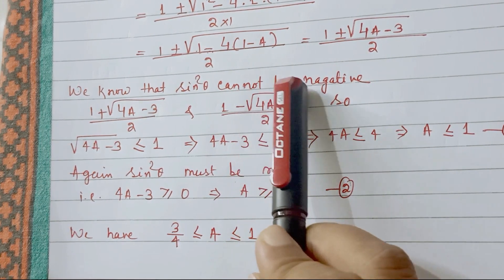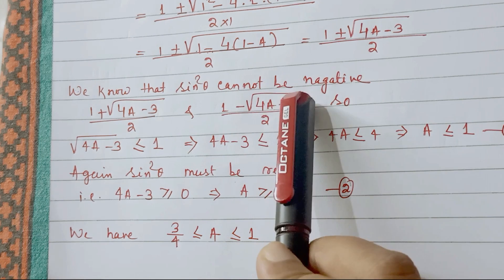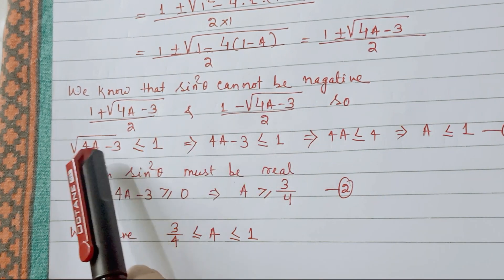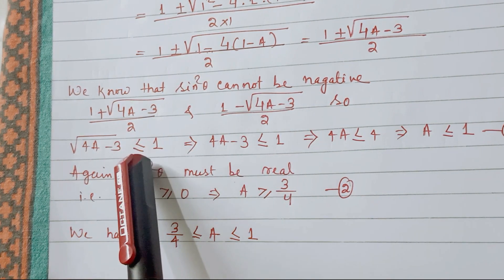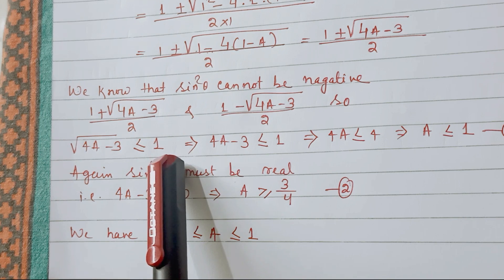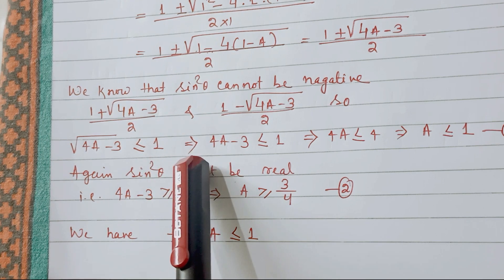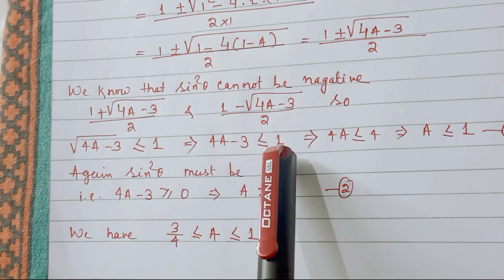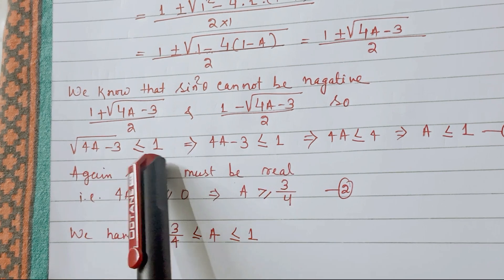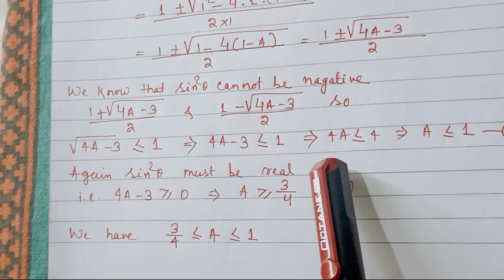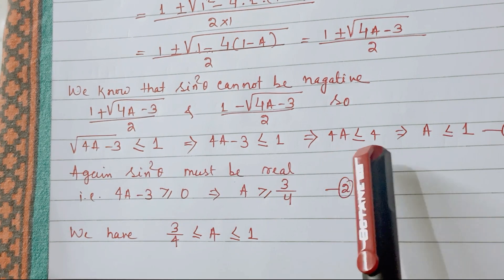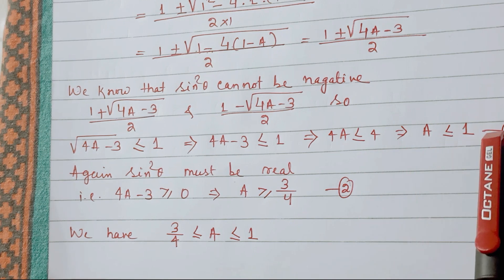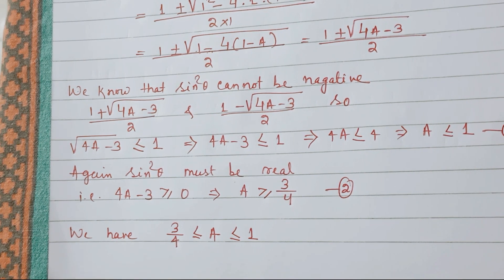So √(4A − 3) must be less than or equal to 1, which implies 4A − 3 ≤ 1 (squaring both sides). Therefore 4A ≤ 4, and A ≤ 1. Hence the first inequality is proved.